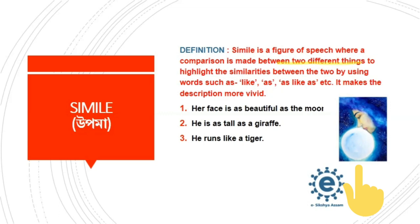For example, instead of saying directly 'she is a shining beauty' or 'she is a very beautiful girl', we use simile: 'her face is as beautiful as the moon.' In simile, we use the words 'like', 'as', 'as...as', 'like...as', and 'and' to make the expression more interesting and vivid.